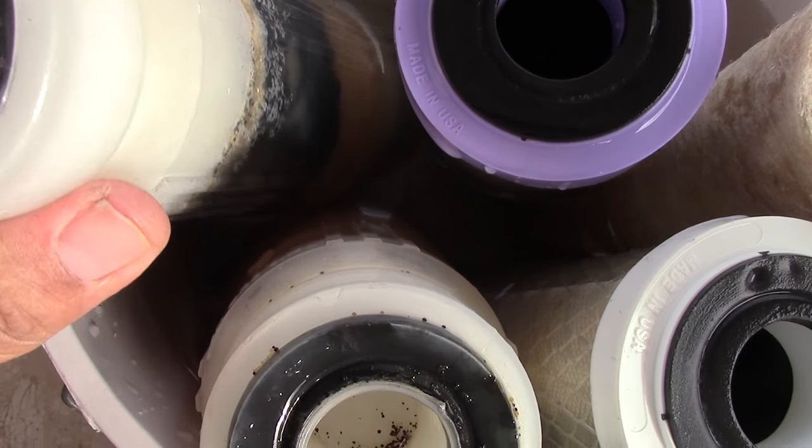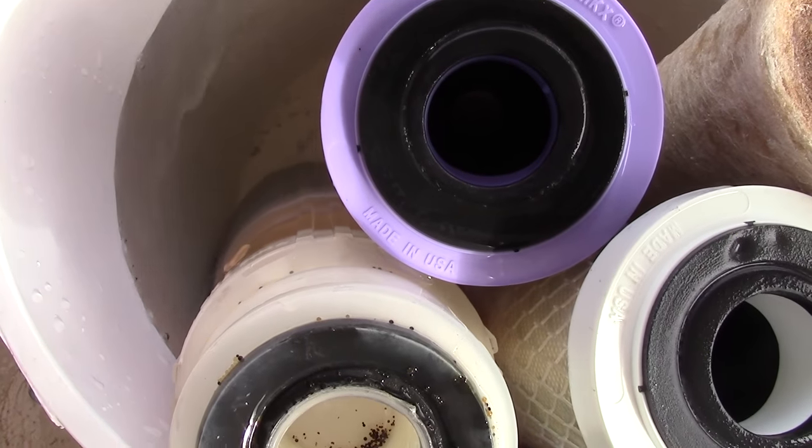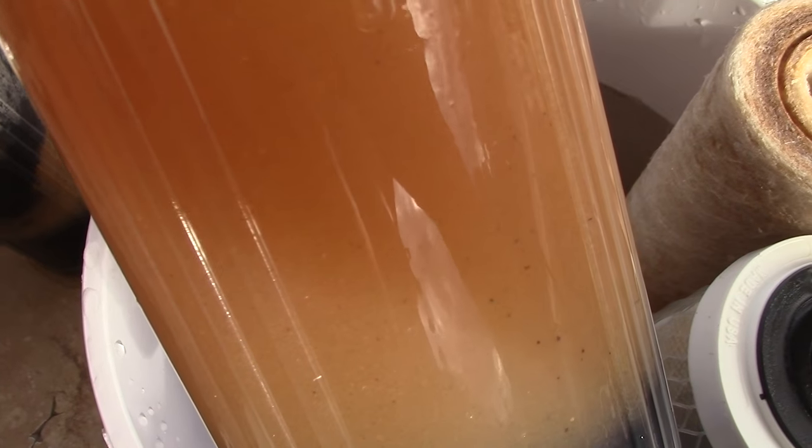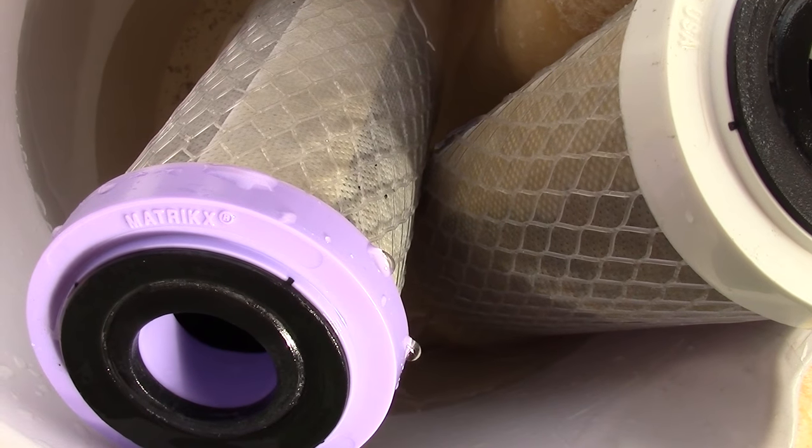As you can see, I repeated the process with several other filters. This is the DI, deionization. I got carbon right there, another DI, and this one is color-changing, so it actually changes colors when it needs to be replaced.